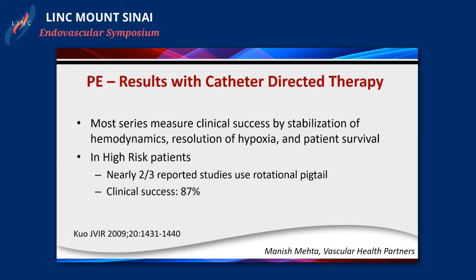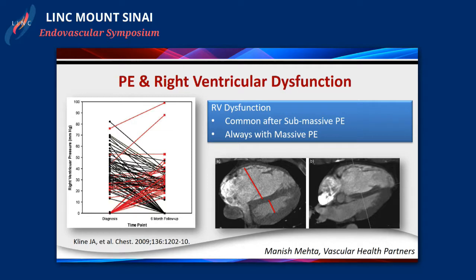If you look at the results of catheter-directed therapy, most series show there is clot resolution to some degree, with improvement in hypoxia and other things. That's what we gauge our efforts by, because we take patients who truly need this - those who are truly collapsing. All we want to do is improve their hemodynamics. We're not there to hit a home run; we simply want to make them better and continue thrombolytics for the next 24-48 hours. Earlier reports showed that people simply parked a pigtail catheter into proximity to the RV and started lysis - and that works pretty well.